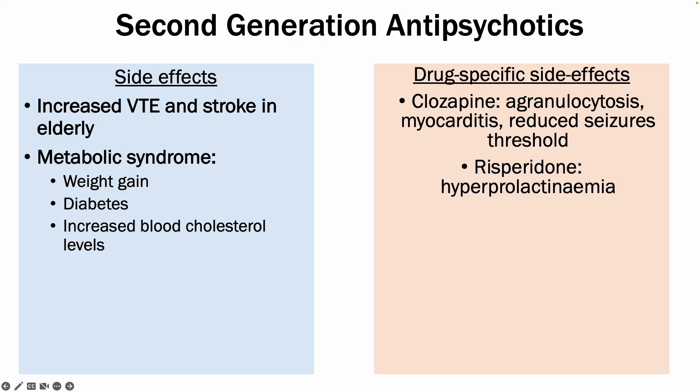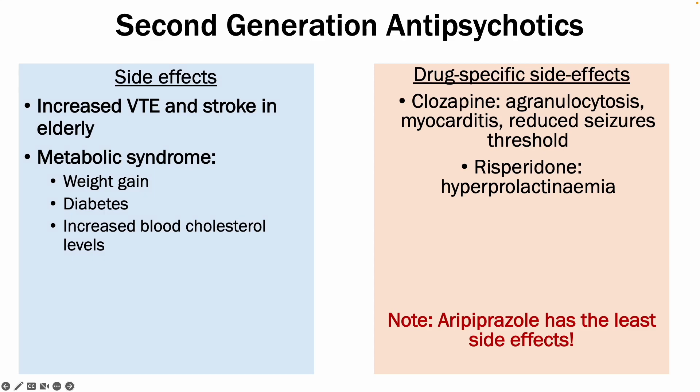Risperidone can cause hyperprolactinemia. Importantly, aripiprazole has the least side effects out of the second-generation antipsychotics, and is therefore often used first in treatment of patients.